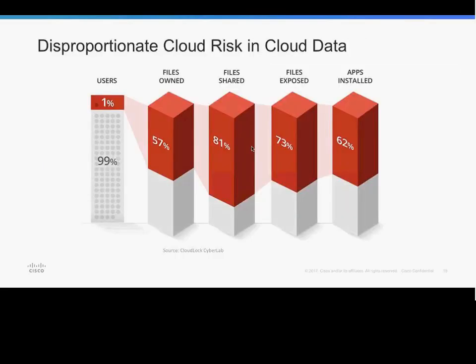We also look at data risk: who owns the most amount of data, who's sharing or exposing the most information in the cloud and on the internet, and who within an organization is installing unauthorized or unsanctioned applications that IT has no visibility of. A statistic from our threat intelligence research team shows that on average, 1% of users within a single organization are causing 99% of the risk - because this 1% own the most data, share the most information, expose the most data, and install the most applications. These are the users you need to focus your attention on.